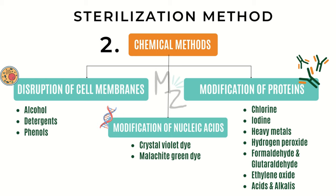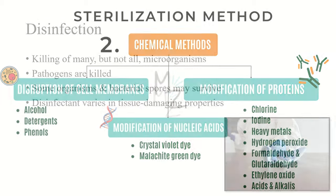Formaldehyde, available as a 37% solution in water (formalin), denatures proteins and nucleic acids. Glutaraldehyde, which has two reactive aldehyde groups, is 10 times more effective than formaldehyde and less toxic; it is used to sterilize respiratory therapy equipment, endoscopes, and hemodialysis equipment. Ethylene oxide gas is used extensively for sterilization of heat-sensitive materials such as surgical instruments and plastics — it kills by alkylating both proteins and nucleic acids. Strong acids and alkalis kill by denaturing proteins.